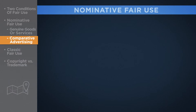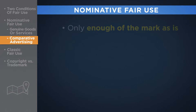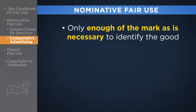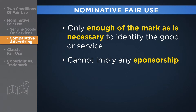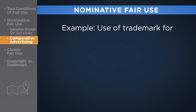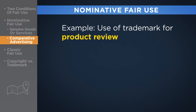Under nominative fair use, the entity using the trademark is permitted to use only as much of the mark as is necessary to identify the goods or services to which it is referring, and cannot imply any sponsorship or endorsement by the mark holder. One other example of nominative fair use is the use of another's trademark for the purpose of a product review.